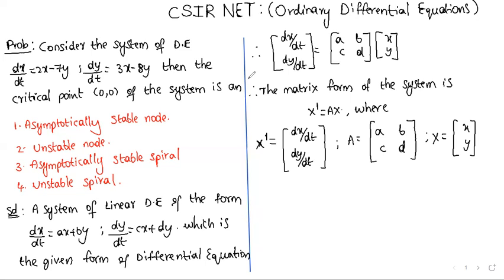The given system of equations can be written in matrix form: [dx/dt, dy/dt] = [[a, b], [c, d]] · [x, y]. Therefore, the matrix form of the system is x' = Ax, where x' = [dx/dt, dy/dt] and A = [[a, b], [c, d]] and x = [x, y].